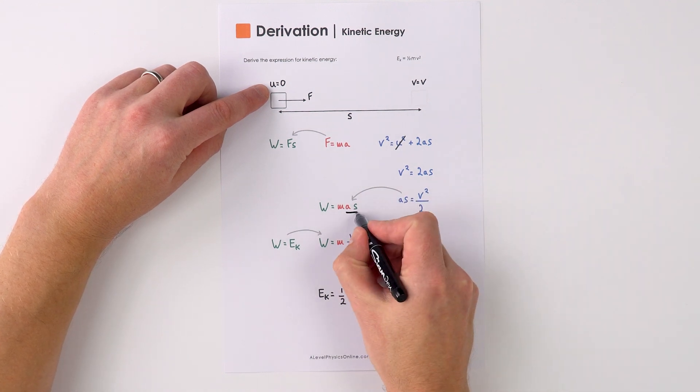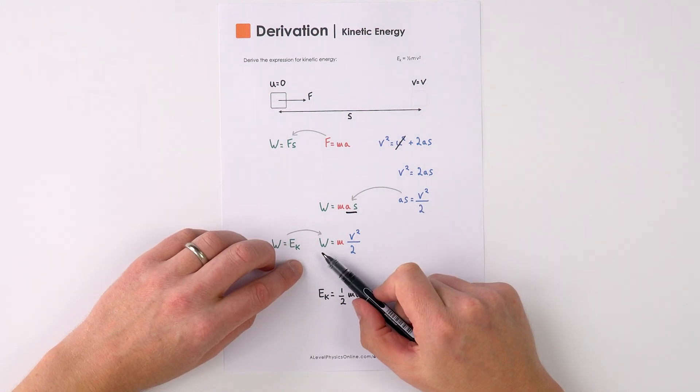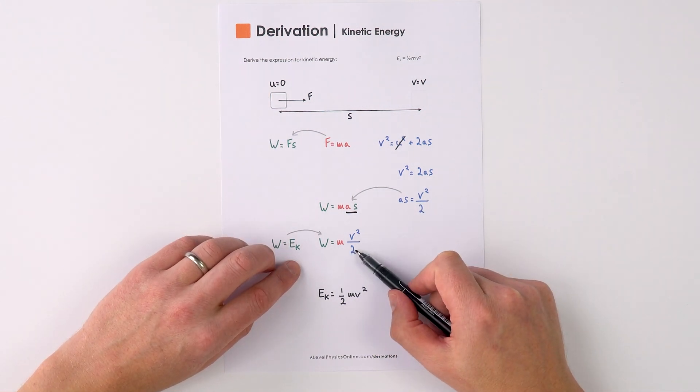And it's this As here that we replace with V squared over 2 to say that the work done is equal to M V squared over 2.